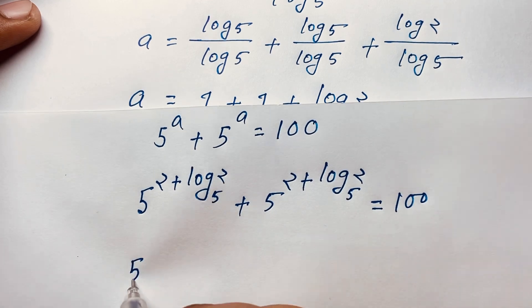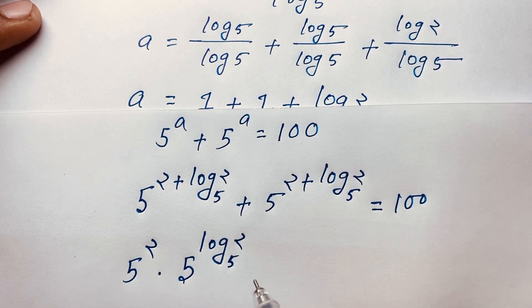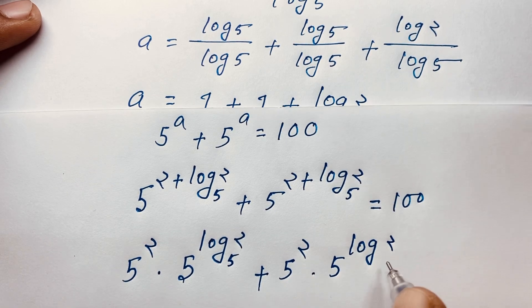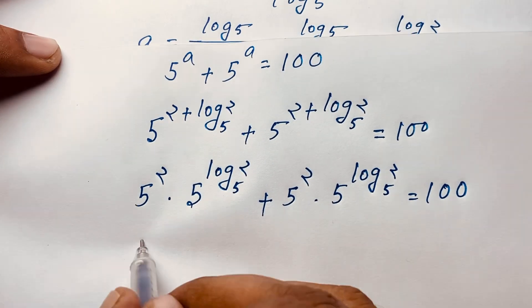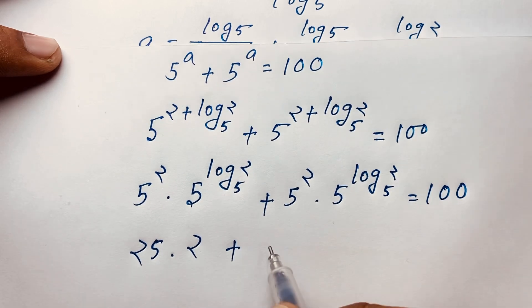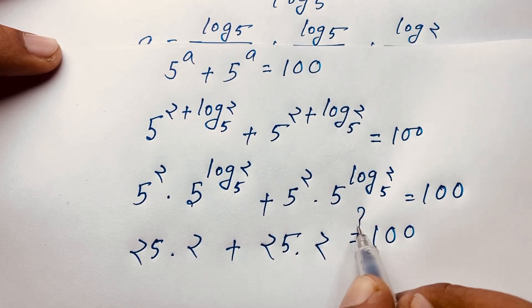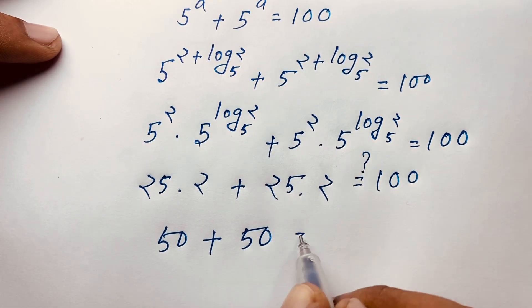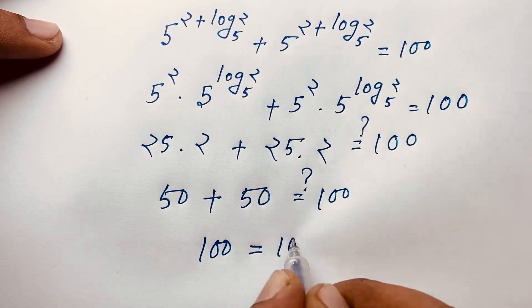Now, you can see here is 5 to the power 2 times 5 to the power log 2 base 5, plus 5 to the power 2 times 5 to the power log 2 base 5, is equal to 100. Now, 5 to the power 2 is 25, and 5 to the power log 2 base 5 equals 2. So it is 25 times 2 plus 25 times 2 is equal to 100. That gives us 50 plus 50 equals 100, which equals 100.